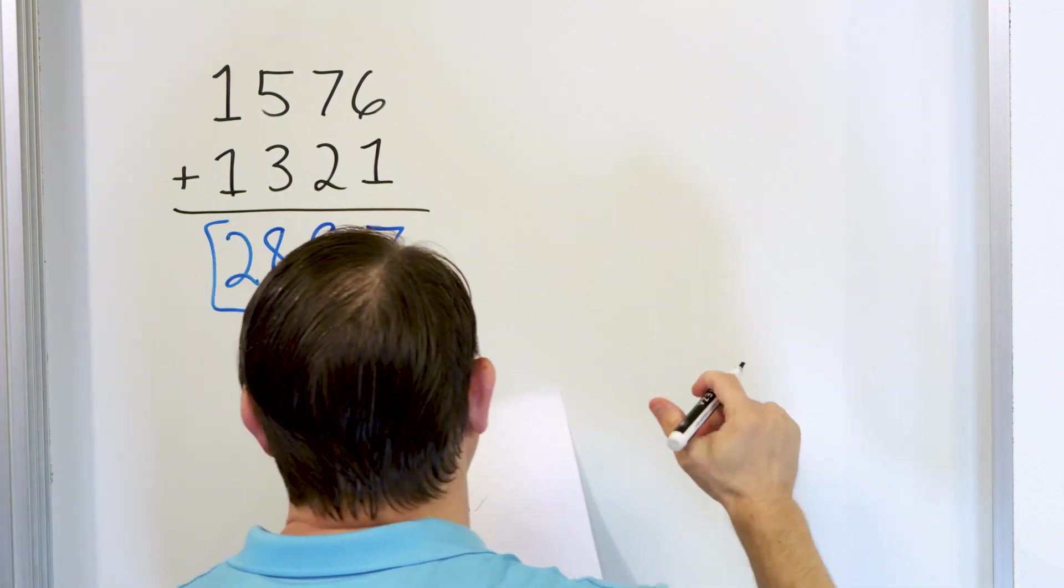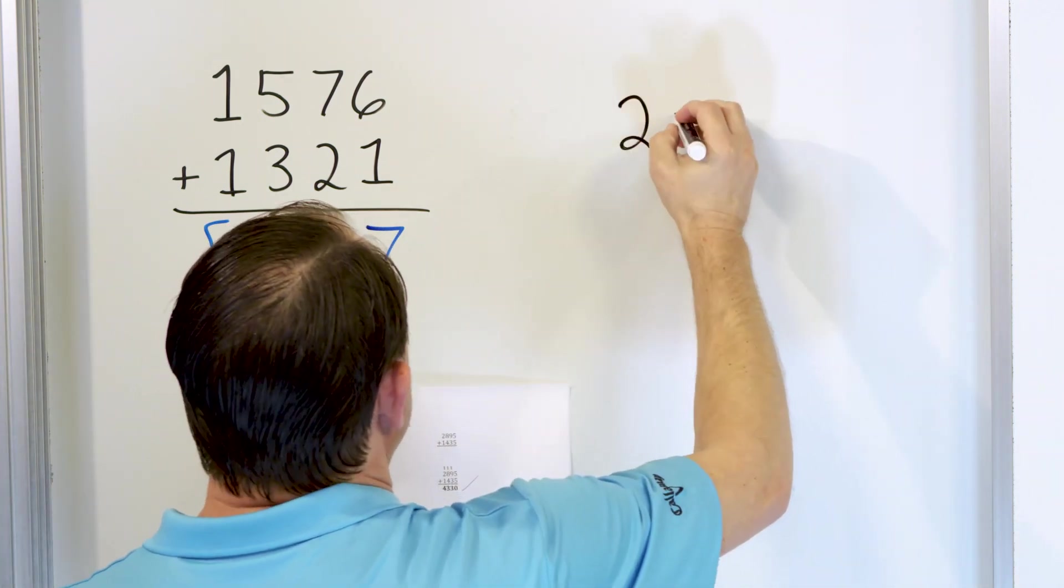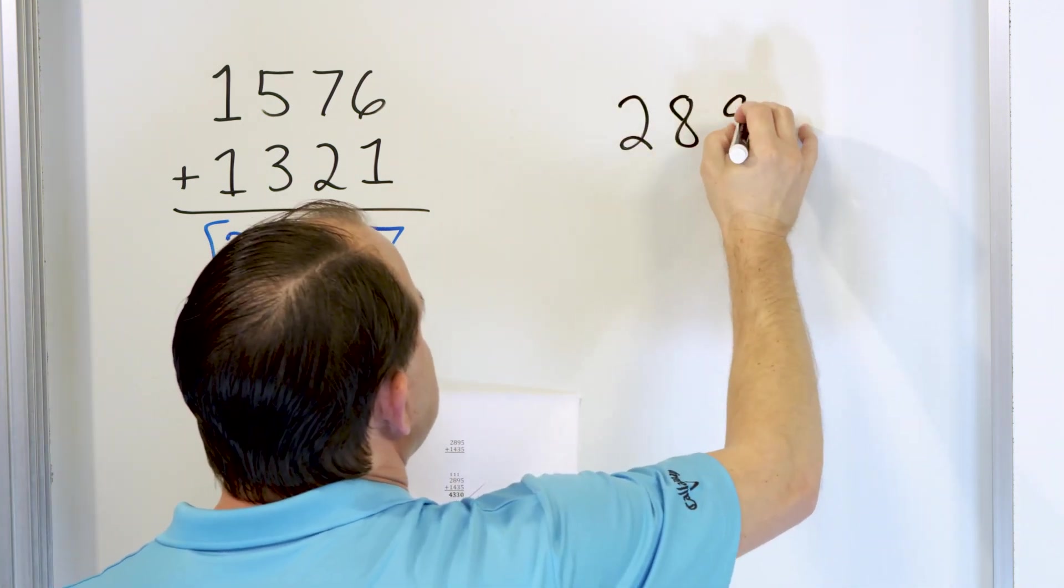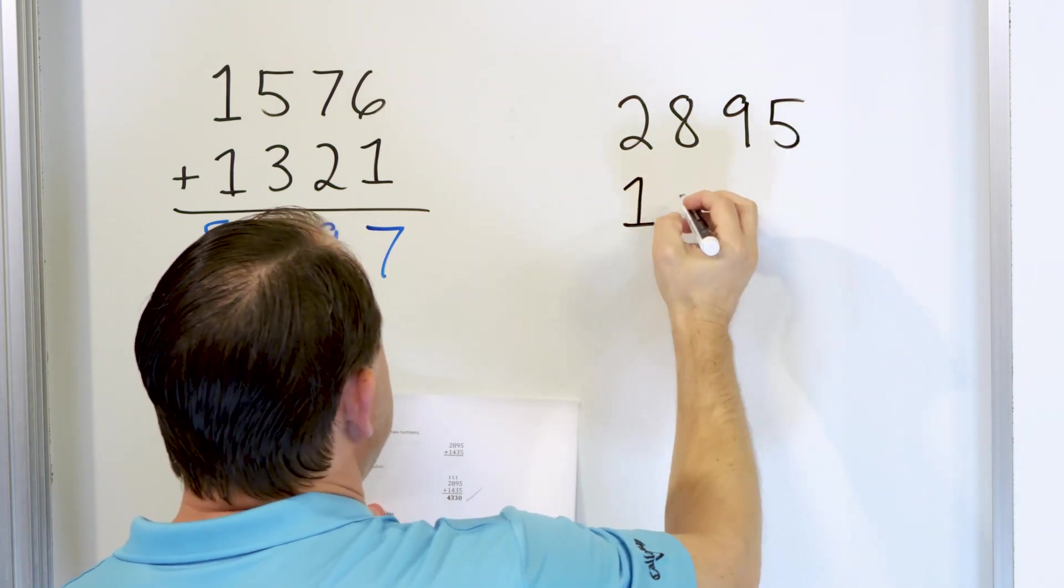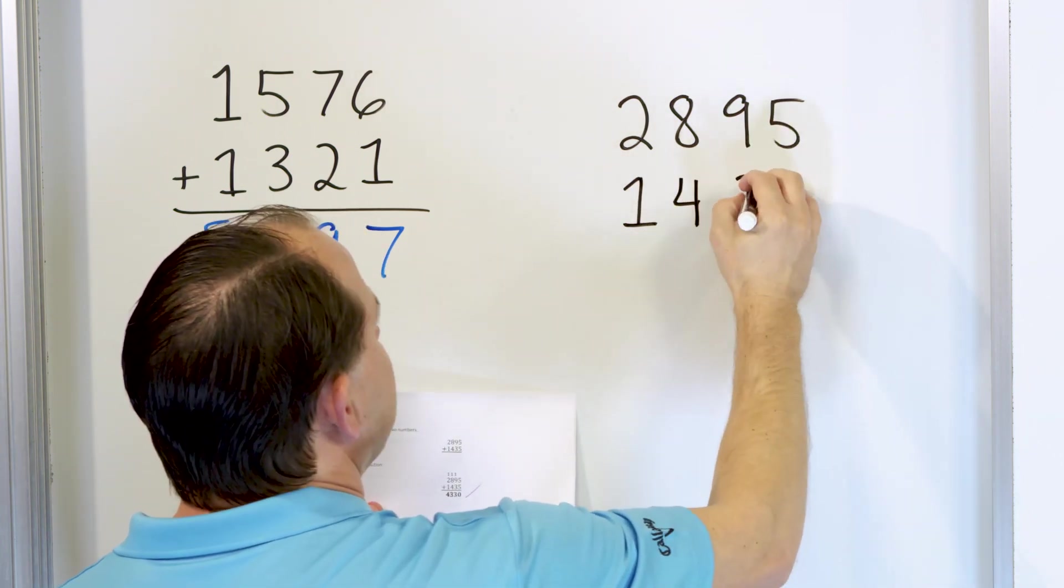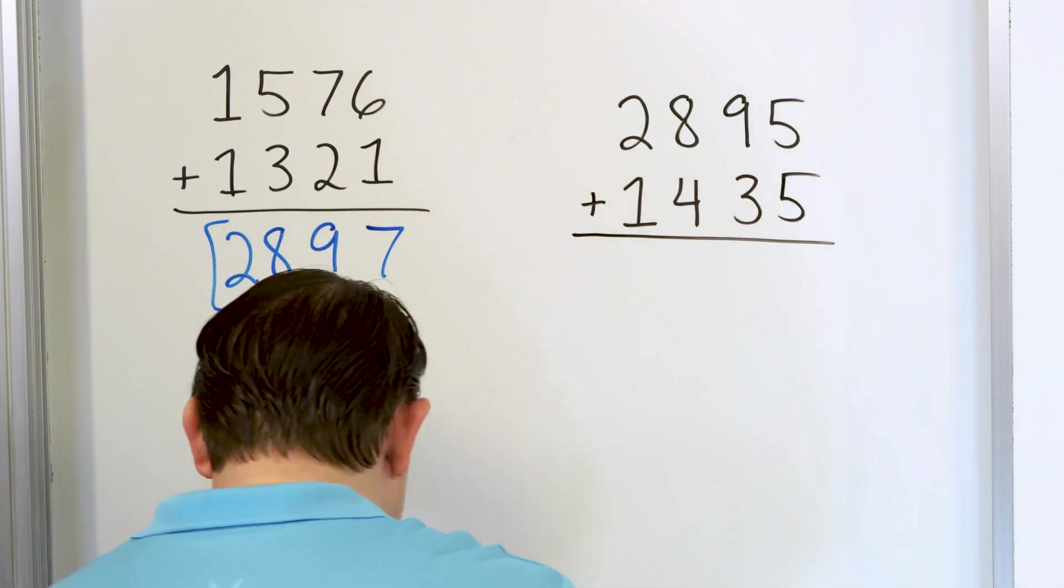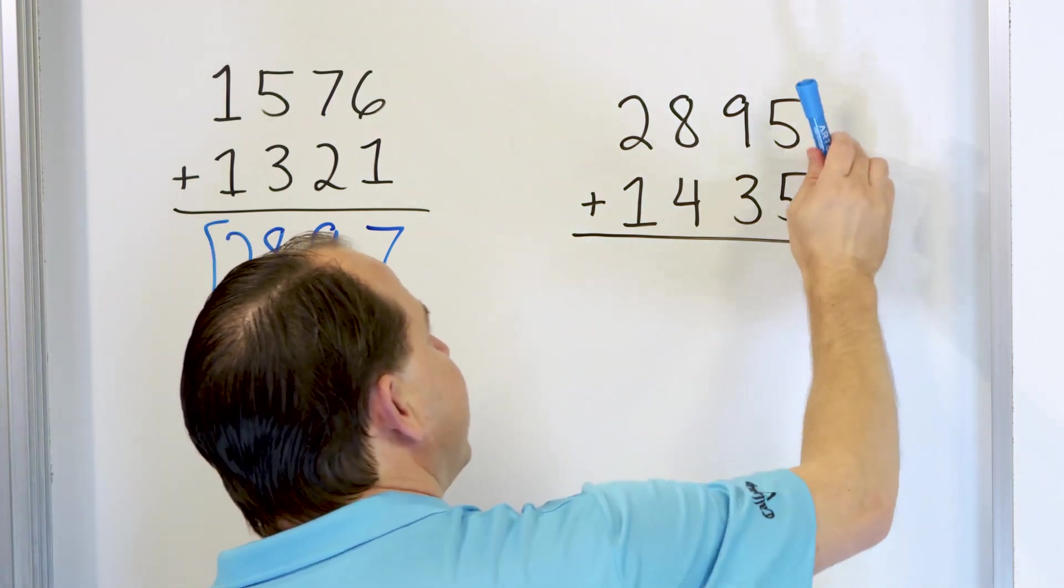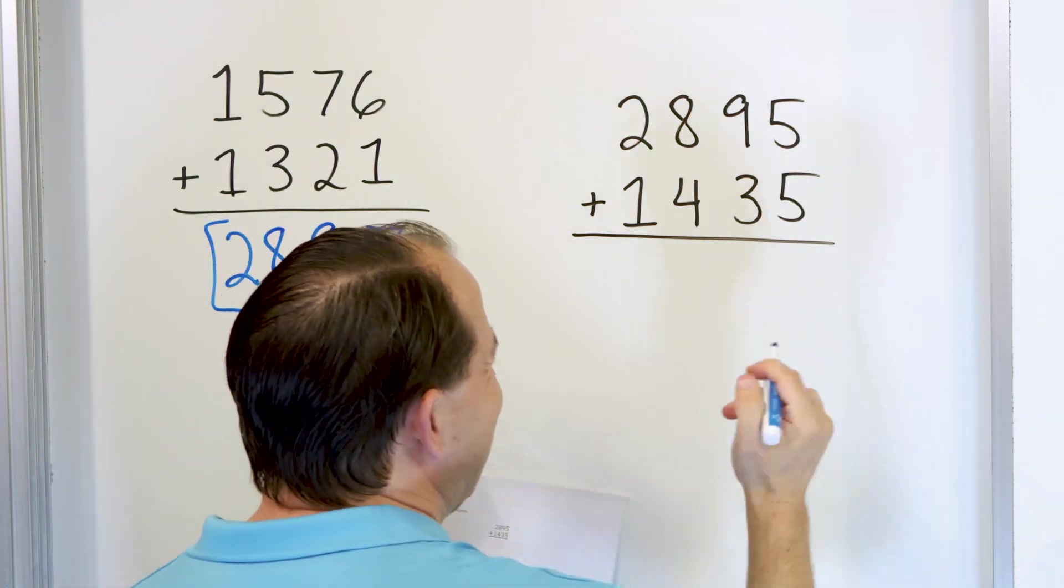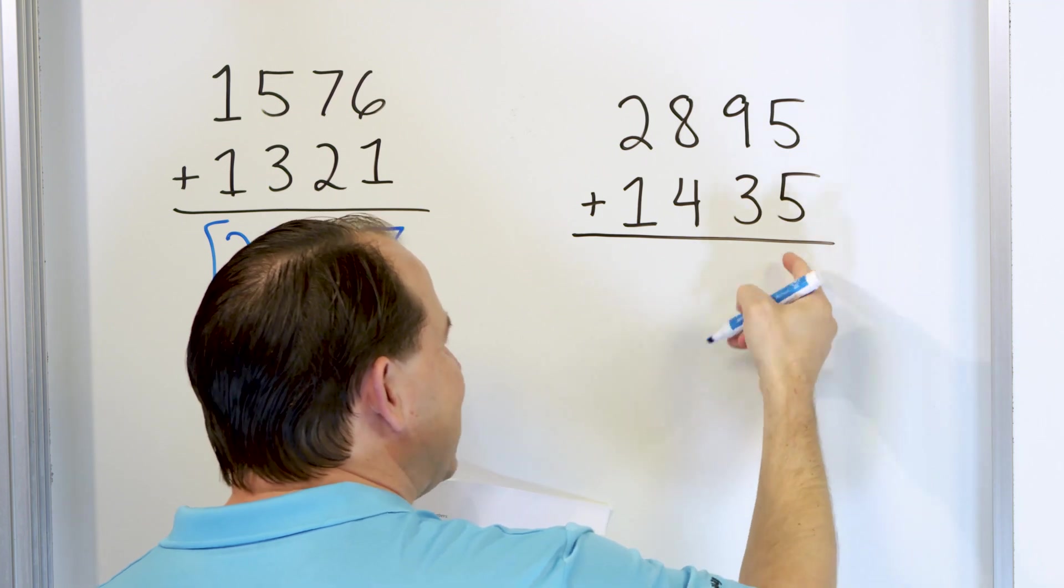Let's take a look at problem number 2. Let's say we have 2,895, and we'll add to that 1,435. We'll add these two numbers together. So again, we start in the right-hand column. 5 plus 5, you know those are complements. 5 plus 5 is 10.